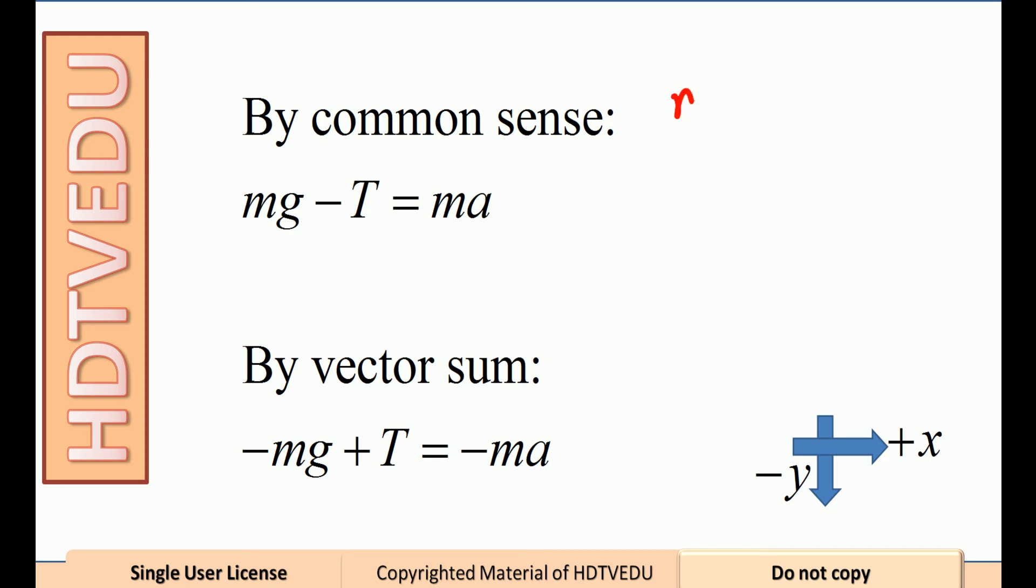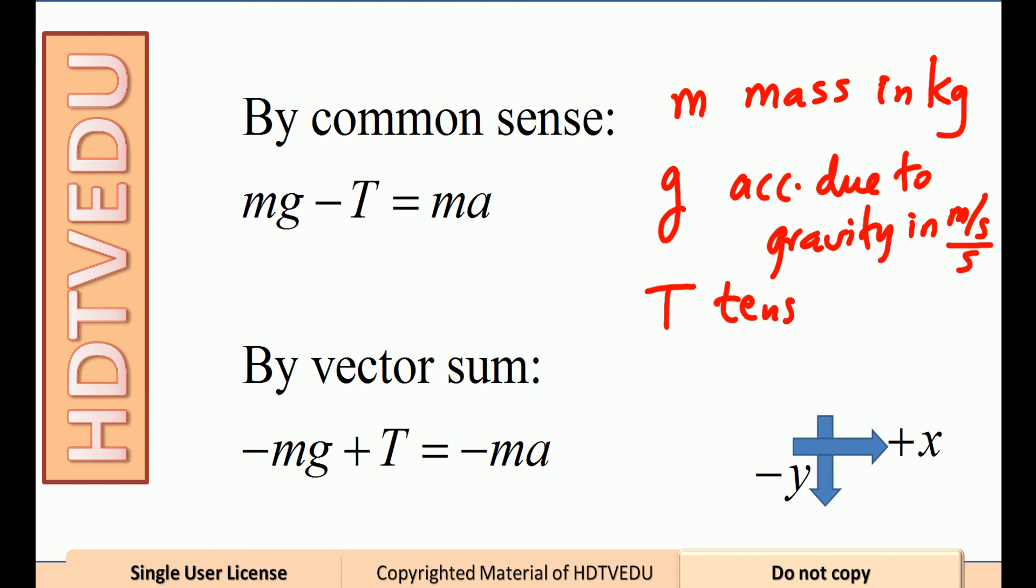What is m? m is the mass in kg. What is g? The acceleration due to gravity in meters per second per second. What is T? Tension in newtons.